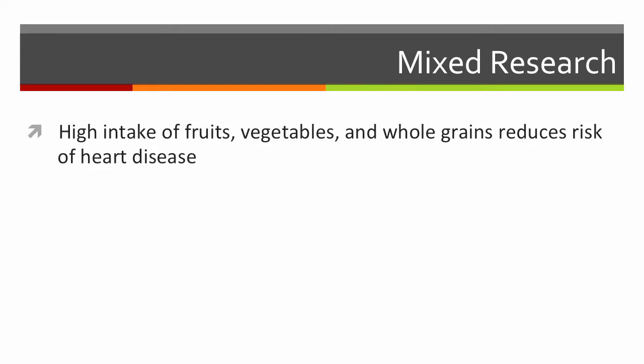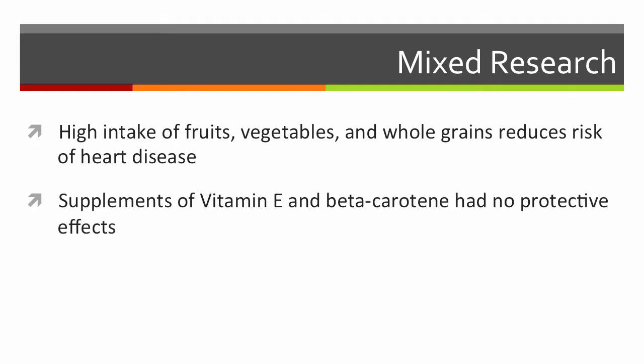Now the research behind the use of antioxidants is mixed. In 1999, the American Heart Association conducted an epidemiological review and reported that high levels of antioxidant consumption through fruits, vegetables, and whole grains showed to reduce the risk of contracting certain cardiovascular conditions. The report goes on further to recommend that a balanced diet high in antioxidants is the best way to protect ourselves against various diseases. However, the same review suggested that taking supplements of vitamin E and beta-carotene rather than consuming whole foods do not have the same protective effects.